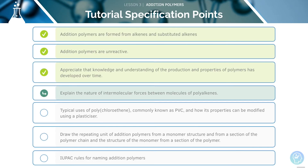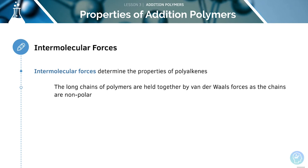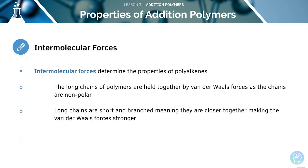We'll now focus on the nature of intermolecular forces between the molecules of polyalkenes. Intermolecular forces determine the properties of polyalkenes. The long chains of polymers are held together by van der Waals forces, as the chains are non-polar. Remember, longer polymer chains are held closer together, which makes the van der Waals forces stronger. If the polyalkene consists of long, straight chains rather than short branched chains, it will be stronger and rigid.